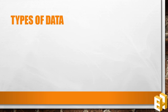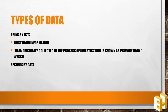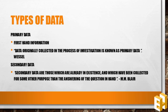After studying the sources of data, it is important to know the types of data. First is the primary data. It is also considered to be the first-hand information. Vessel defines it as the data originally collected in the process of investigation. Second is the secondary data. It is the data which is already collected by some third person or organization. Blair defines it as the data which is already in existence and which has been collected for some other purpose than answering the question in hand.